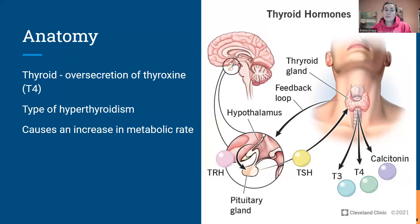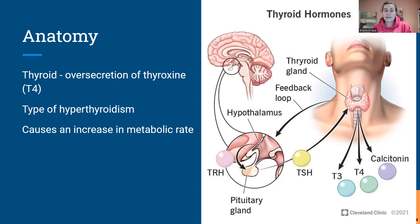So, anatomy — it's a type of hyperthyroidism. What's happening is the thyroid is over-secreting thyroxine, which is T4. There is another one that is T3, but we're talking about T4 in this specific example. It could be that the thyroid itself is the problem and is over-secreting — that would be considered primary hyperthyroidism.